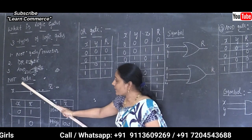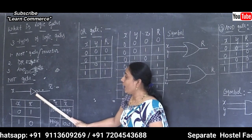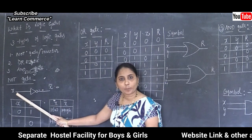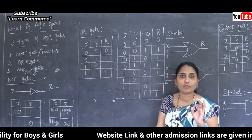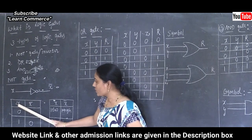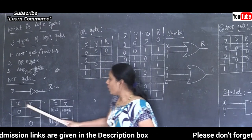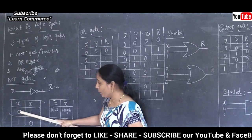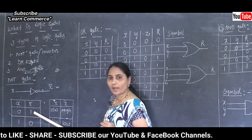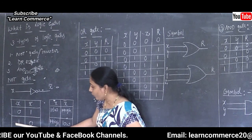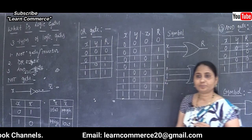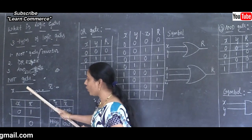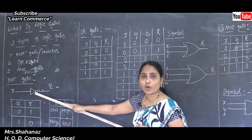OR gate has two or more inputs but only one output. AND gate also has two or more inputs, producing only one output. Now about the NOT gate: it operates using only one variable. If input is 0, output is 1; if input is 1, output is 0. This is the truth table and symbol of the NOT gate.